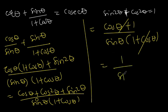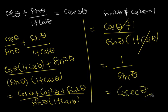We are left with one over sin theta, and one over sin theta is cosec theta. So we have proven that cot theta plus sin theta divided by one plus cos theta is equal to cosec theta.